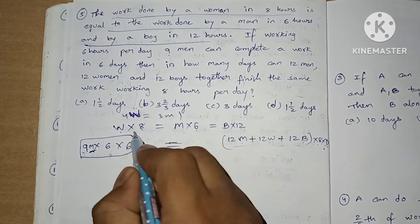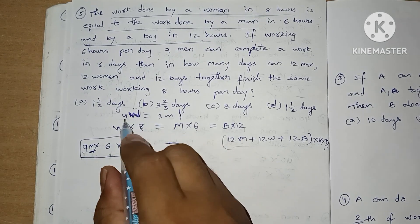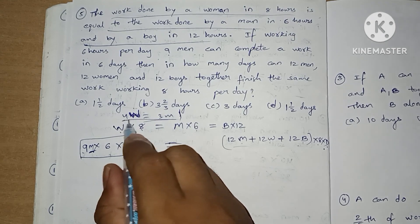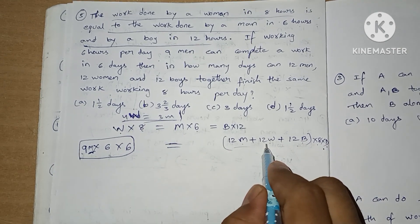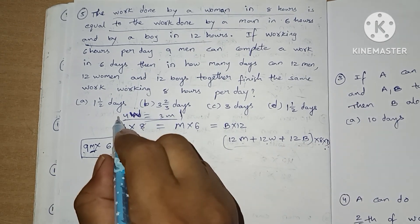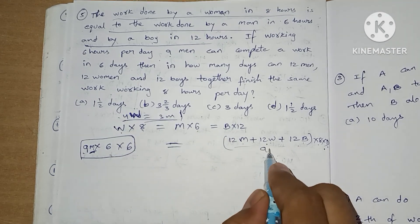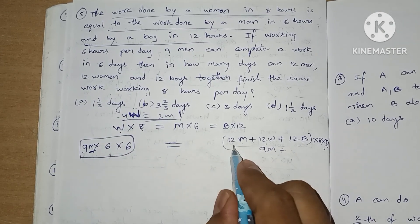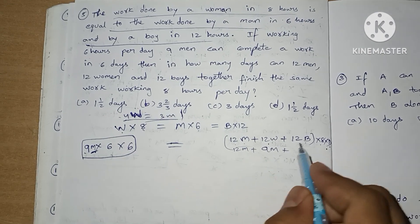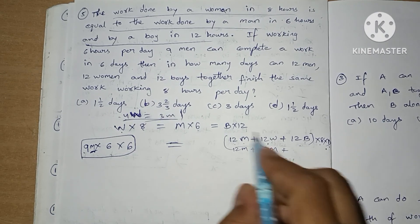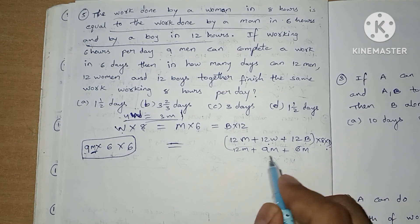We have a relation: 4 women equals 3 men. So 12 women means 3 × 3 = 9 men. 12 men plus 9 men, plus 12 boys. 12 boys is equivalent to 6 men, so this is 6 men.